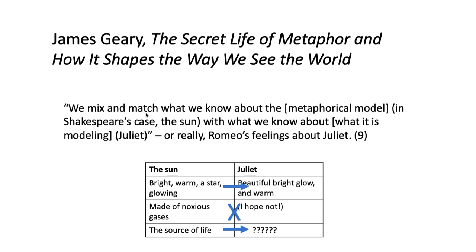When Romeo thinks of Juliet as the sun, he thinks of her as bright, warm, glowing — not as made of noxious gases. He discards that part of the model in thinking about his love for Juliet.